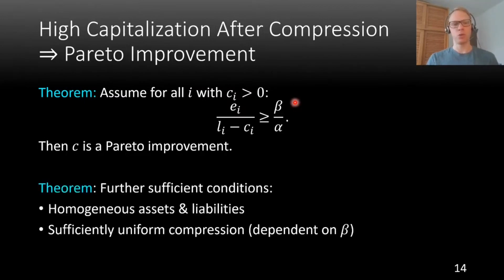In the paper, we have further sufficient conditions. For example, we show that not only is compression a Pareto improvement when all banks are in a strong position, but also when they are in very homogeneous or similar positions asset and liability wise. So it doesn't have to be all strong, just needs to be similar enough. And we also provide some sufficient conditions on the structure of the compression itself.